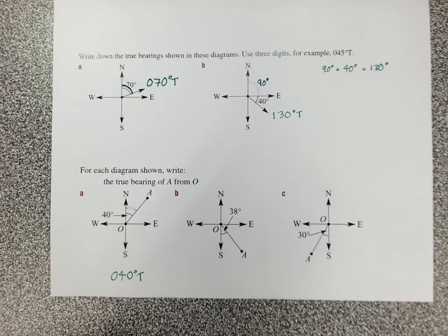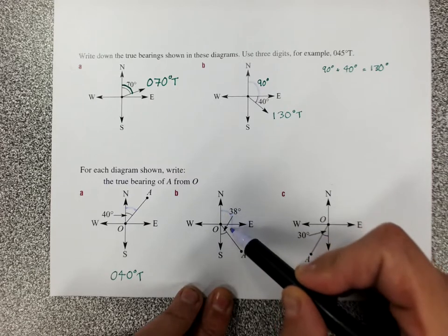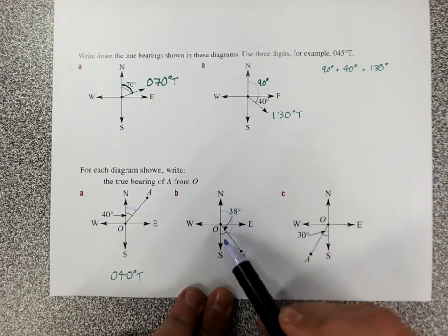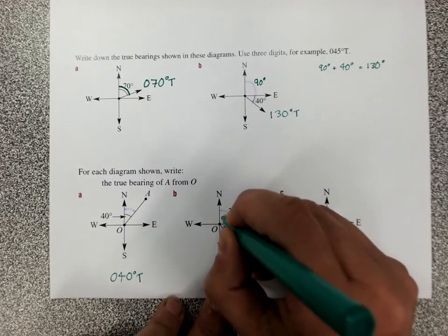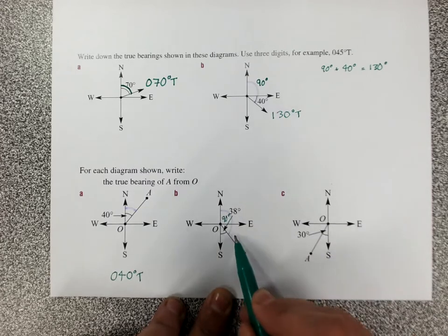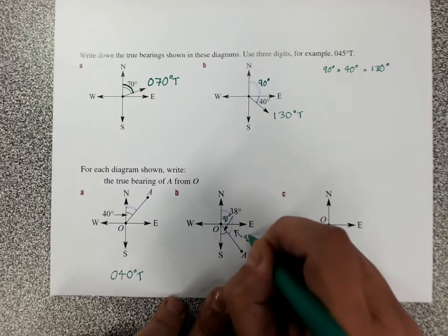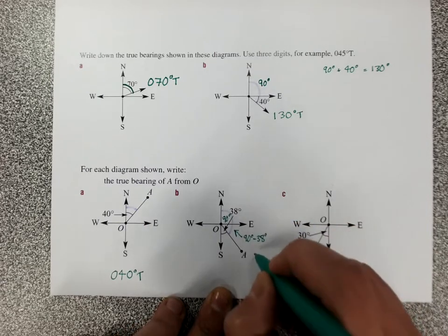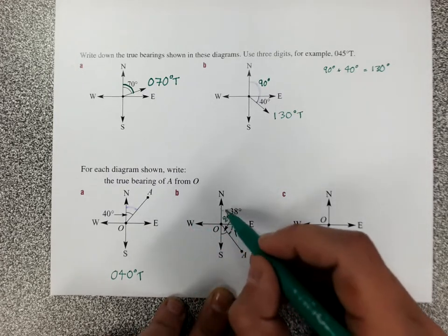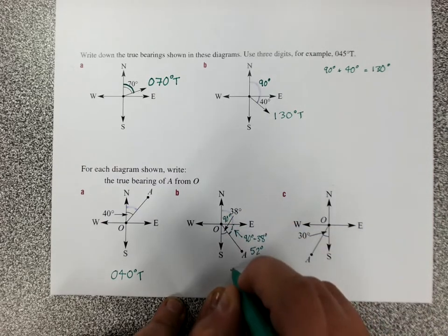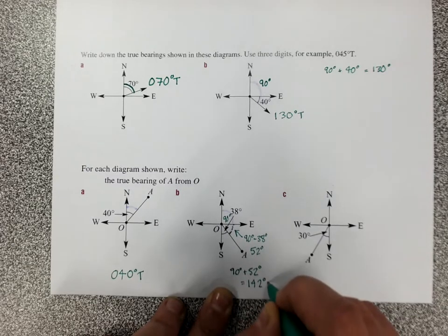Now here we get a little tricky. From O look north and draw around until you touch the bearing line. Now this is the angle we want, not this one. This is what we need. Check how many full lots of 90 degrees we've got. I've got one full lot of 90 because I've got one full quarter. But I've got to work out what's left here out of this 90. So this one in here is going to be 90 degrees take away 38 degrees, that is 52 degrees in this little bit here. We'll have to add those on now to get the full angle around. 90 degrees plus 52 degrees is going to give me 142 degrees T for true.